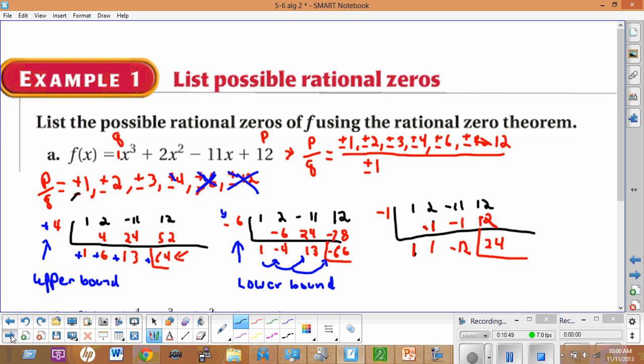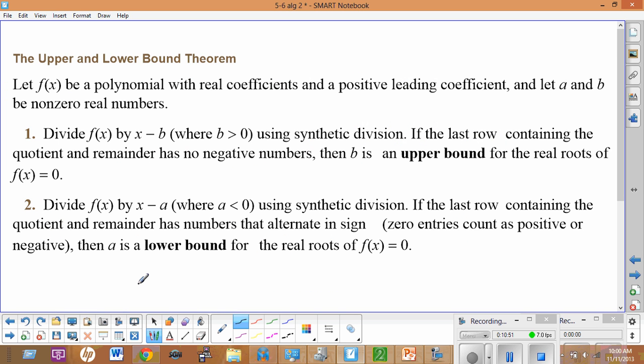Let's go ahead and finish off and add these to our notes. Here's formally the rules. The upper and lower bound theorem: Let f(x) be a polynomial with real coefficients and a positive leading coefficient, and let a and b be non-zero real numbers.